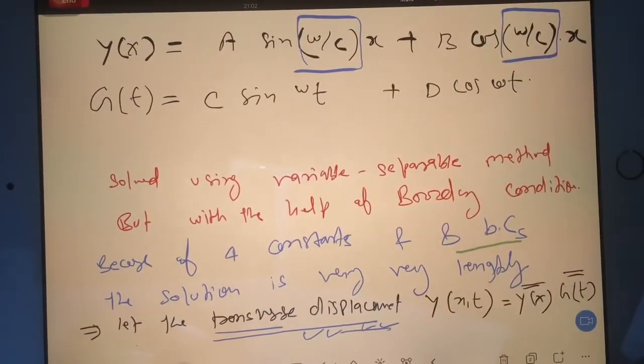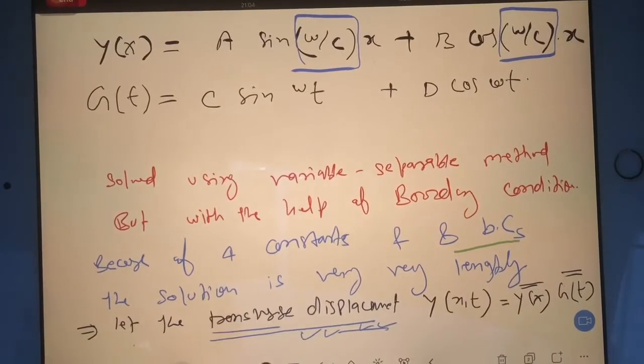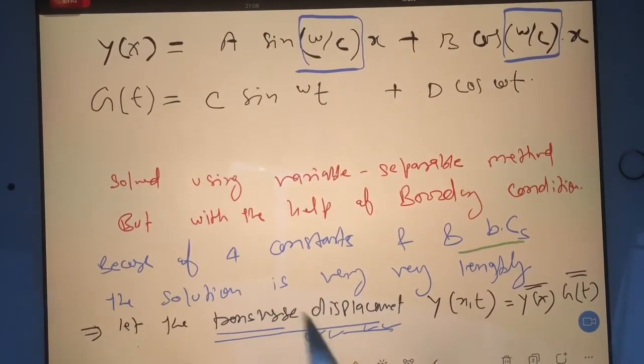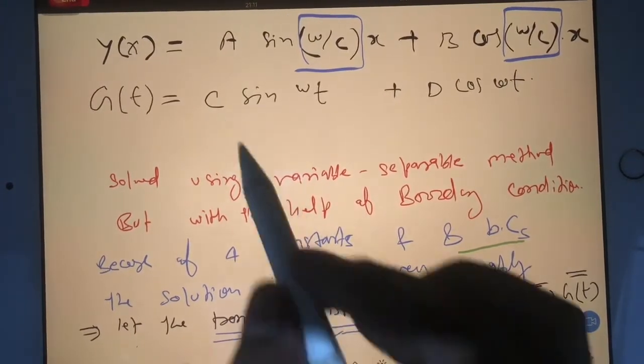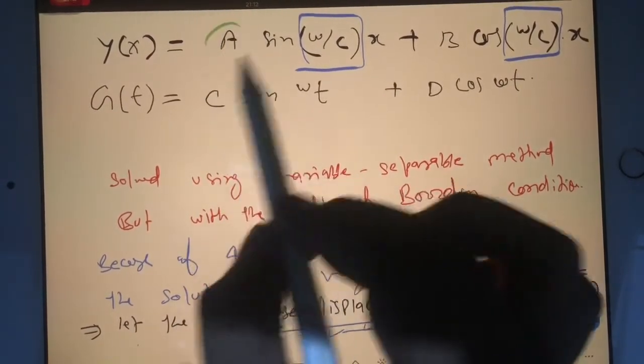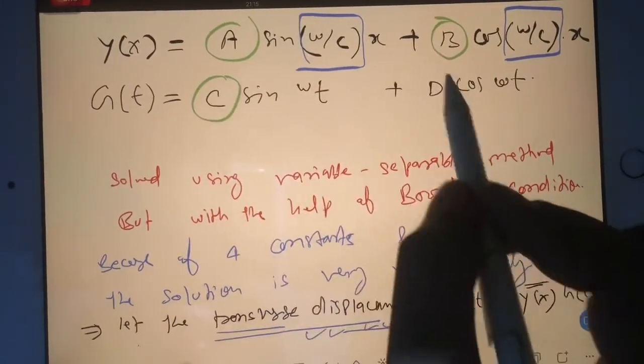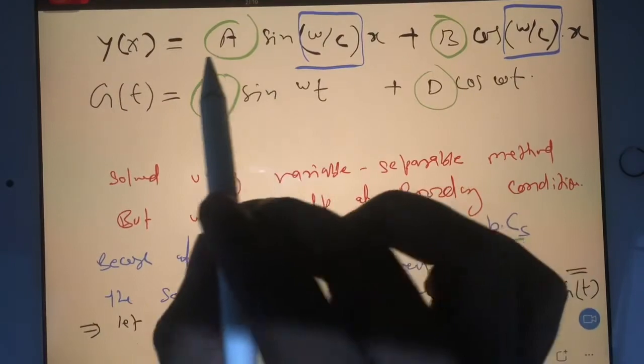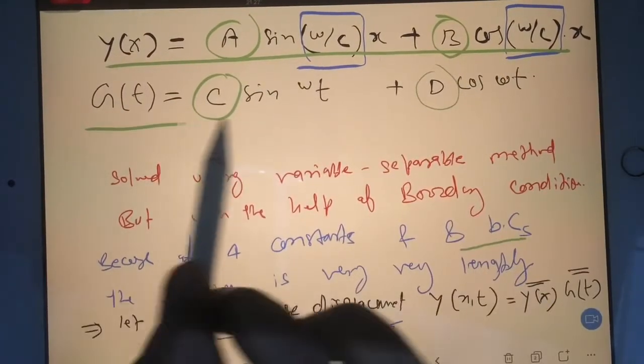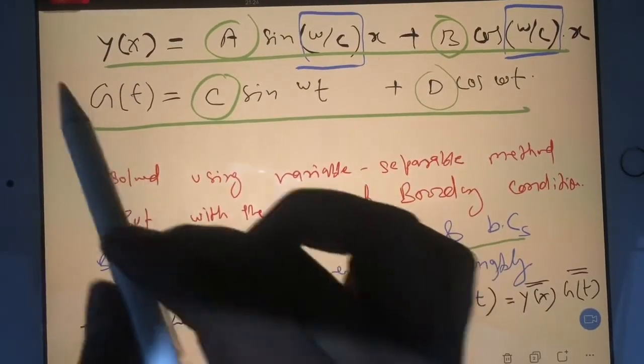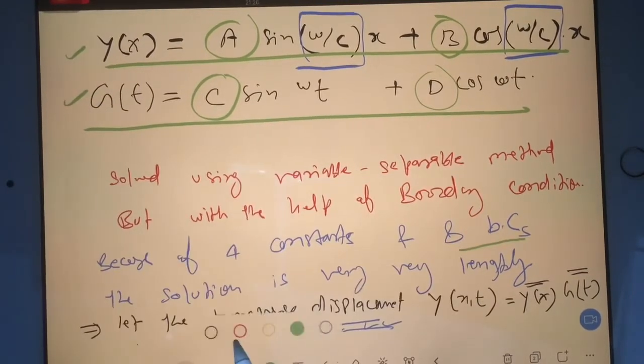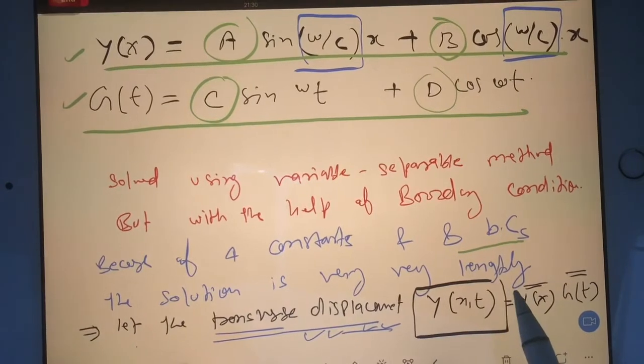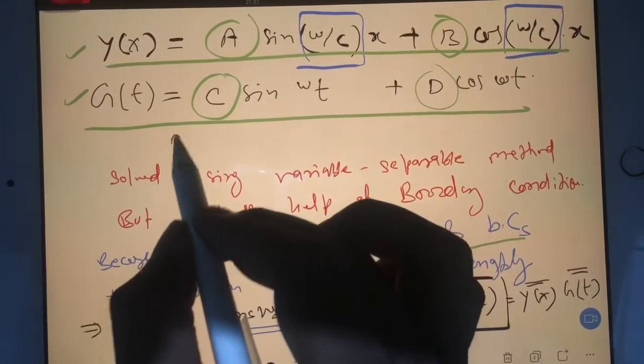You can see total how many variables we got? We got constants A, B, C, and D - four constants. Now we have to multiply this entire equation with this entire equation, and after multiplication you will be getting the main equation of y(t). In that main equation you will have four variables: A1, A2, A3, A4.